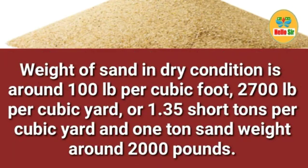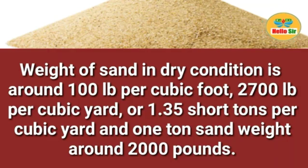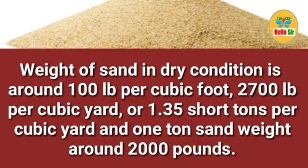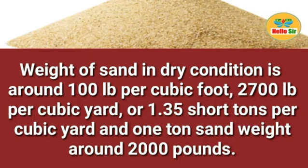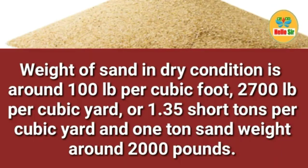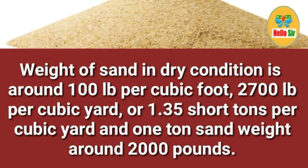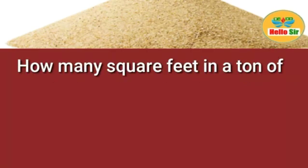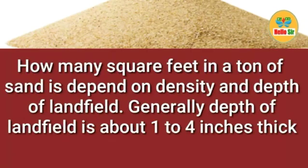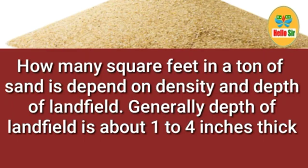The weight of sand in dry condition is around 100 pounds per cubic foot and 2700 pounds per cubic yard, or 1.35 short tons per cubic yard. As one ton of sand weighs around 2000 pounds, how many square feet in a ton of sand depends on density and depth of landfill.